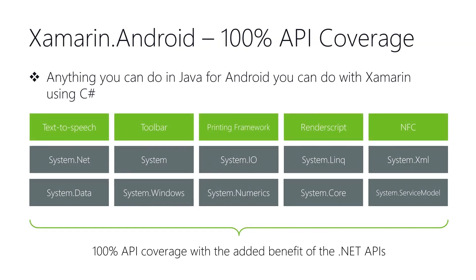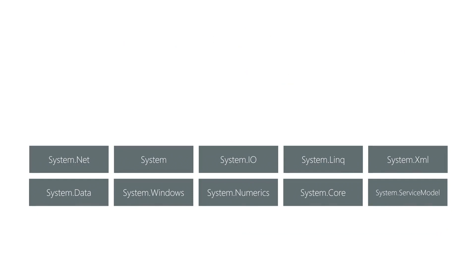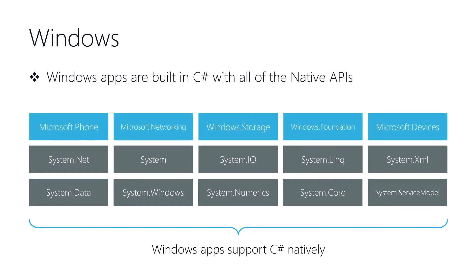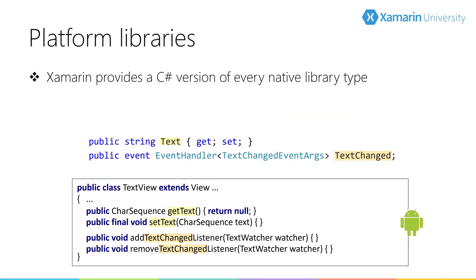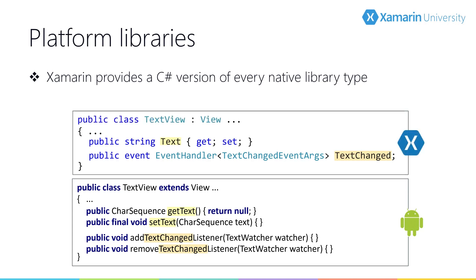And what about Android? It's the same story — 100% API coverage, all available in C#. And of course, when it comes to Windows, Microsoft already provides all of the development tools and APIs in C#. Google provides Android library types written in Java, and Apple provides library types written in Objective-C. Xamarin provides a C# version of every one of those types. Xamarin also exposes the platform APIs using common C# patterns. For example, on Android using Java you'd commonly see getter and setter methods, but in C# you would expect a property — and that's exactly what you get when writing Android applications with Xamarin.